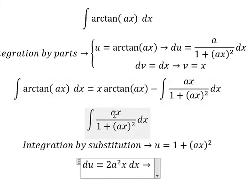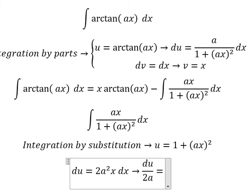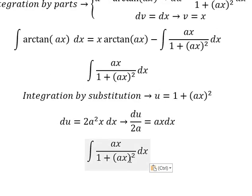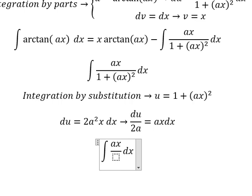Because we just have a, so we divide both sides with 2a. This one we change for u. ax dx we change for du over 2a.